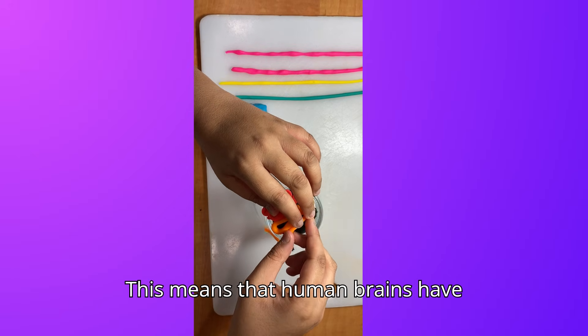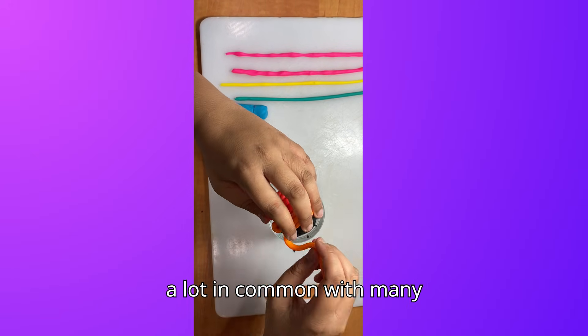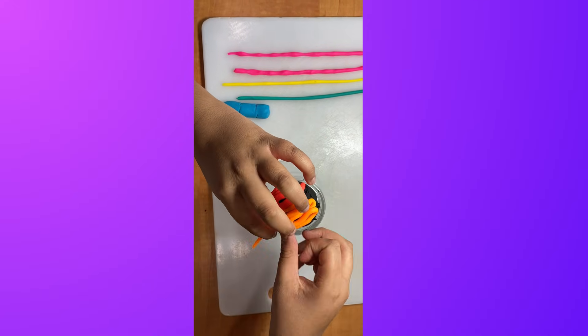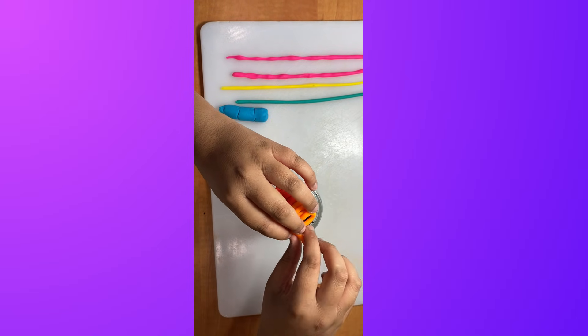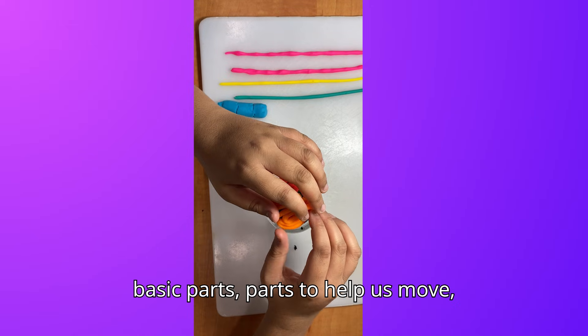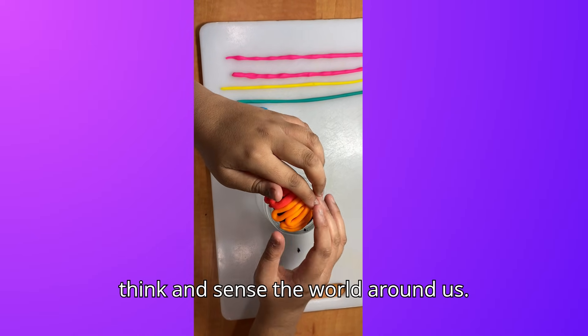This means that human brains have a lot in common with many other animals. Humans are animals if you think about it. Almost all animal brains have the same basic parts. Parts to help us move, think, and sense the world around us.